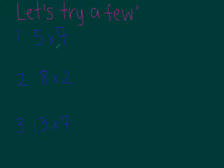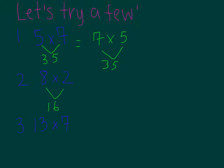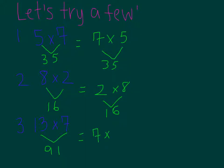Let's try a few examples. We know 5 times 7 is equal to 35. Switching the order, 7 times 5 is also equal to 35. Number 2: 8 times 2 is equal to 16, same as 2 times 8, also equal to 16. And the final one: 13 times 7 is equal to 91, same as 7 times 13, equaling 91.